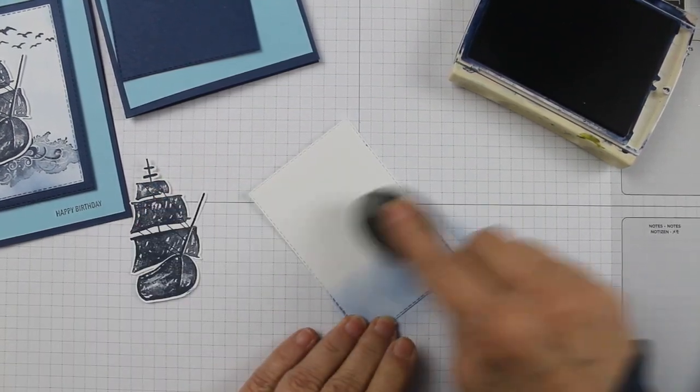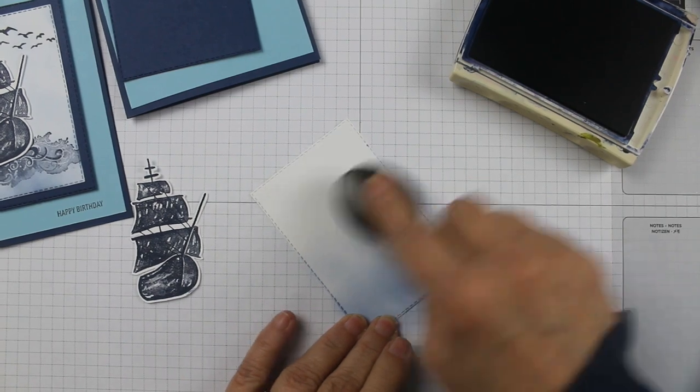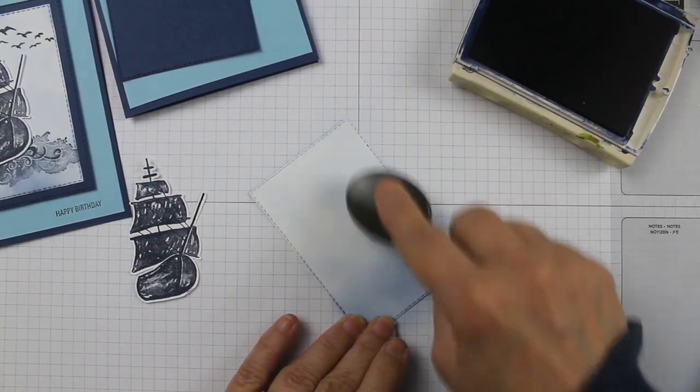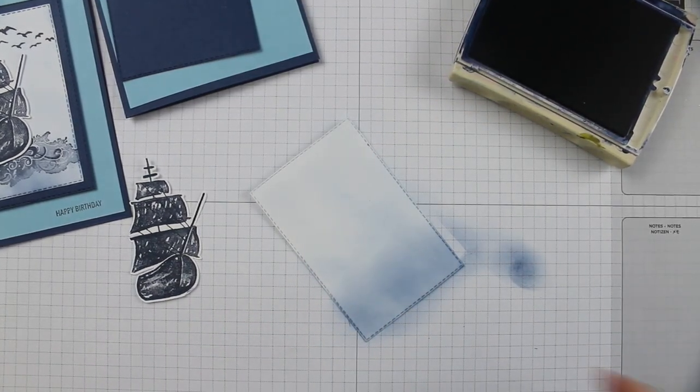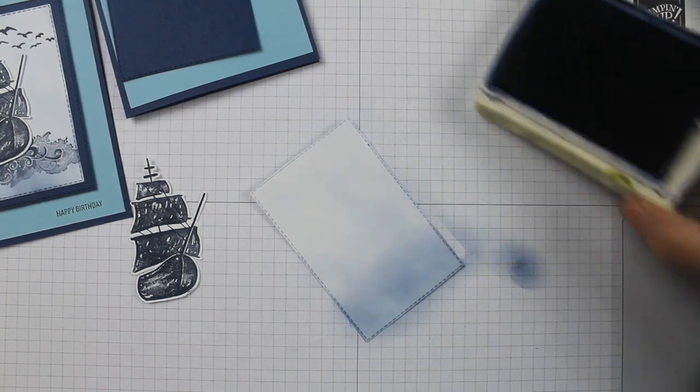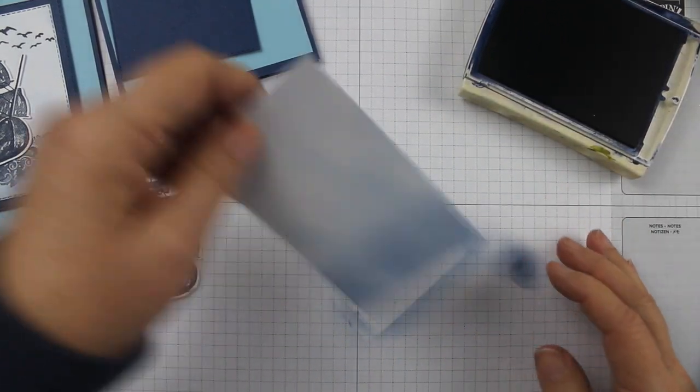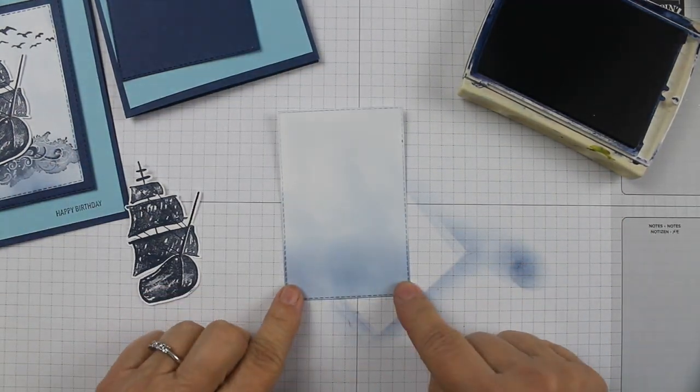And then you just kind of go lightly up to the top, so it's like a sky. That's all there is to that one - super easy, right? So dark on the bottom for the sea and then lighter on the top for the sky.